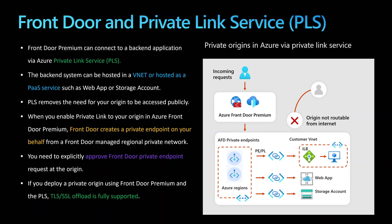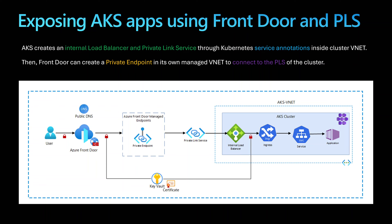This way you can implement TLS or SSL offloading at the Azure Front Door level. The only way for users to connect to your application is through Azure Front Door, where you can add security using the WAF feature — so there are no direct connections from users to your services without going through a secure service. Follow along to see a demonstration of how to expose AKS applications using Azure Front Door and PLS.